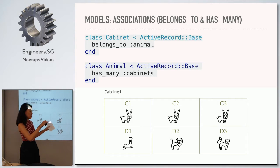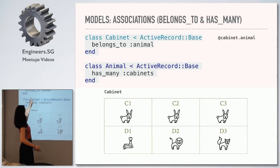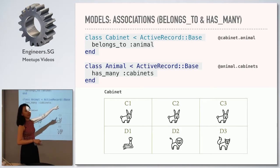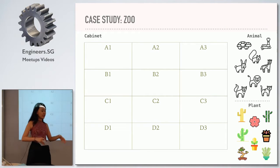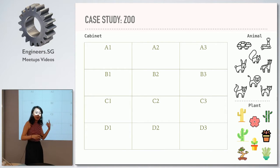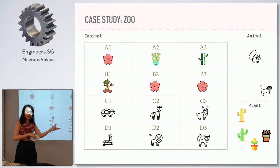So this is a zoo with animals only. You can find out what animal is in a cabinet by calling the instance of a cabinet dot animal, because of the association `belongs_to :animal`. And for each animal instance, you can find out which cabinets they belong to by calling `animal.cabinets`, because you have written `has_many :cabinets`. But then the zoo decided to introduce some plants. So in each cabinet, instead of having an animal, you can have a plant as well — but either one animal or one plant. So how do you link a cabinet with either an animal or a plant?